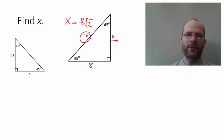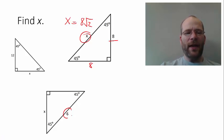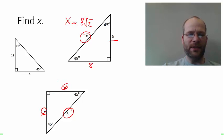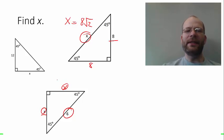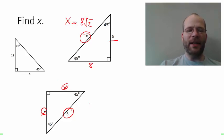Let's look at one more example. Here we know the hypotenuse and we're trying to find the leg. Once we find x, we'll have both legs since they're equal. The relationship works exactly the same way: the hypotenuse equals the leg times the square root of 2.